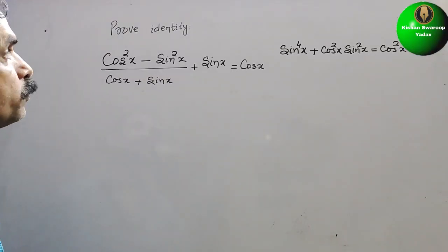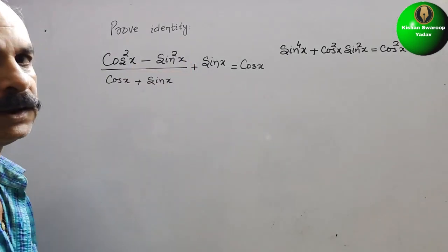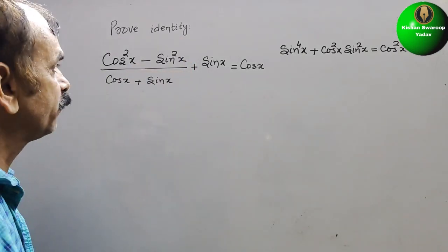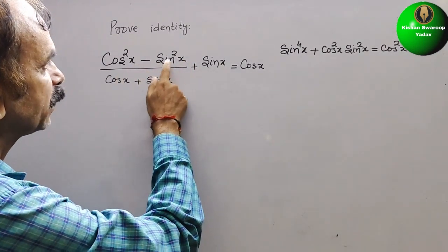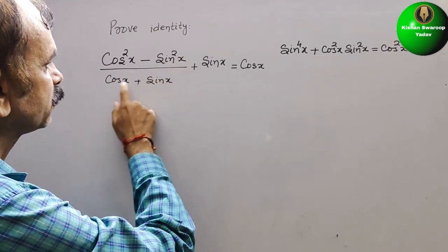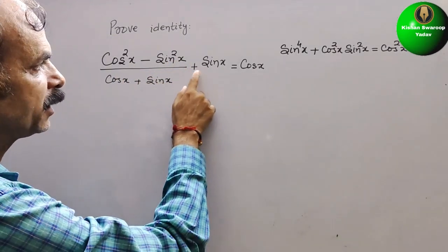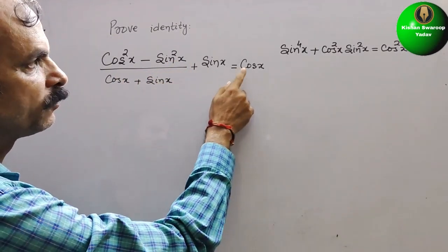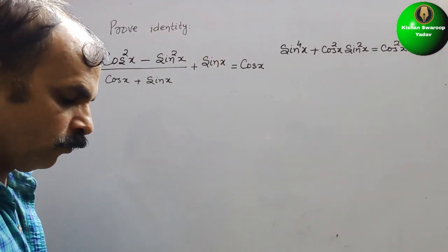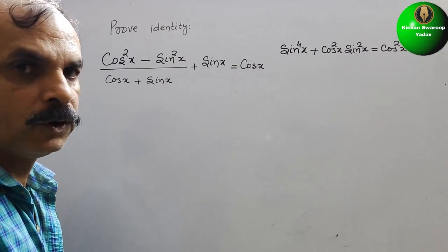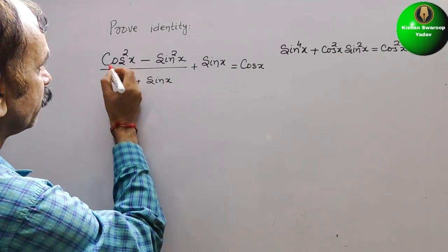The question is to prove the identity: cos squared x minus sin squared x, divided by cos x plus sin x, is equal to cos x minus sin x. We need to prove this identity.